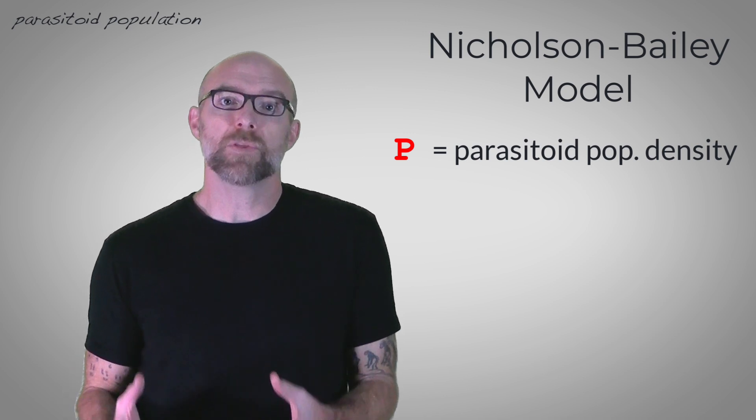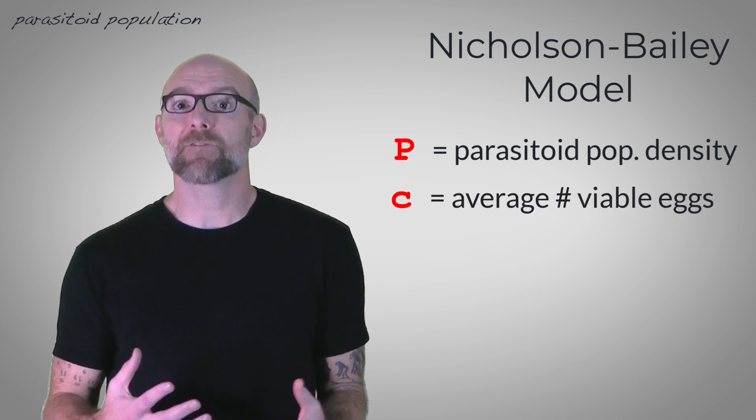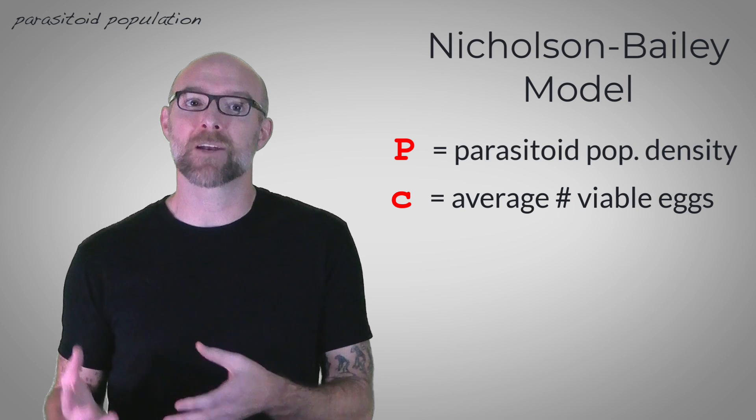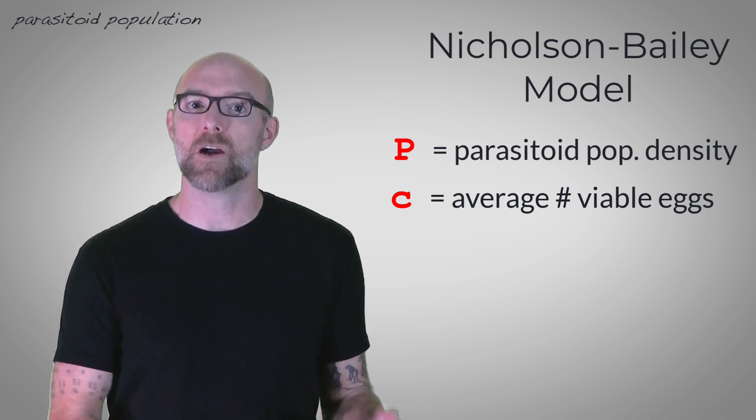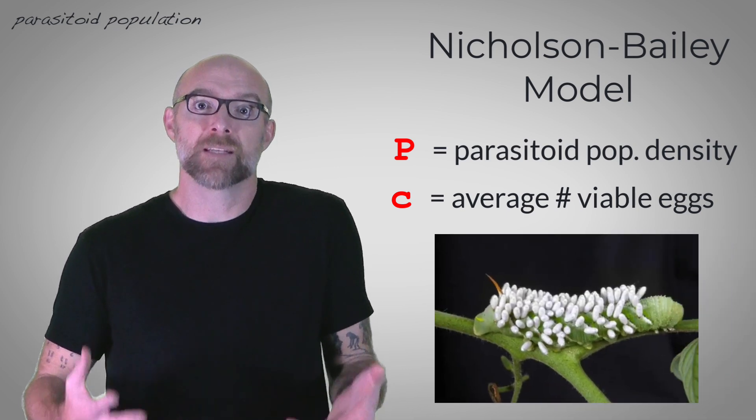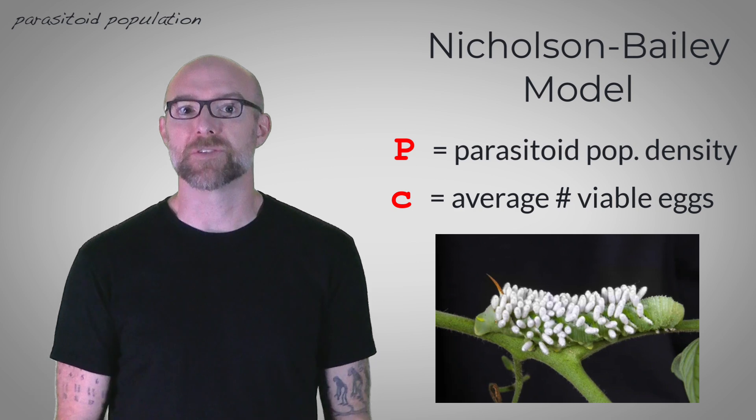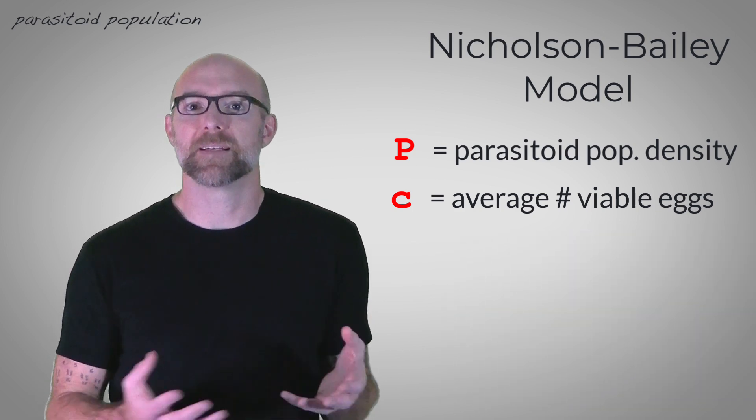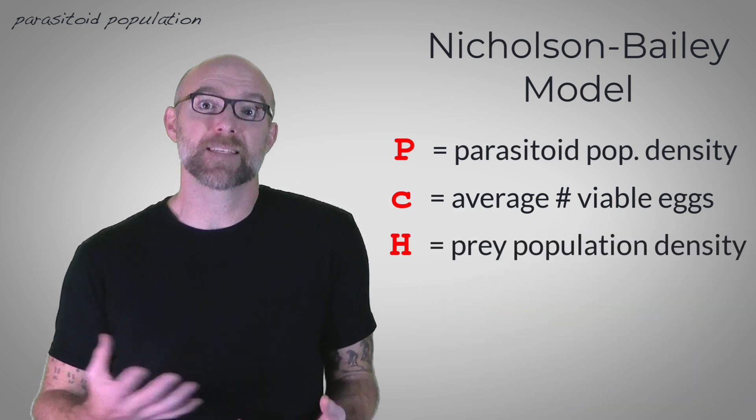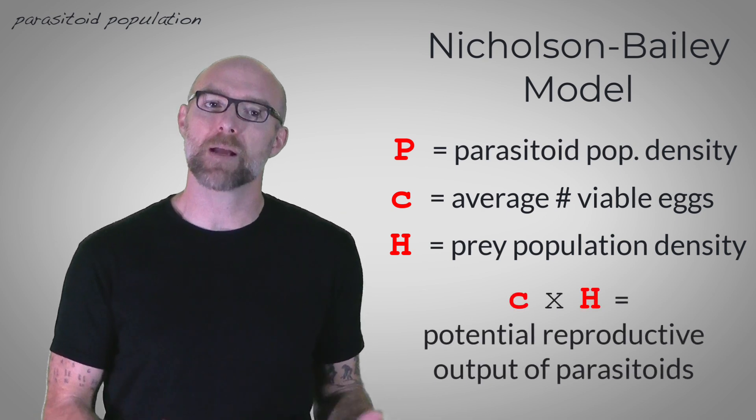well, we'll start with the variable c. This is the average number of viable eggs that are laid on or inside a host, because that's how insect parasitoids reproduce. We then multiply this by prey density, and this gives us an idea of the growth rate of the parasitoids.